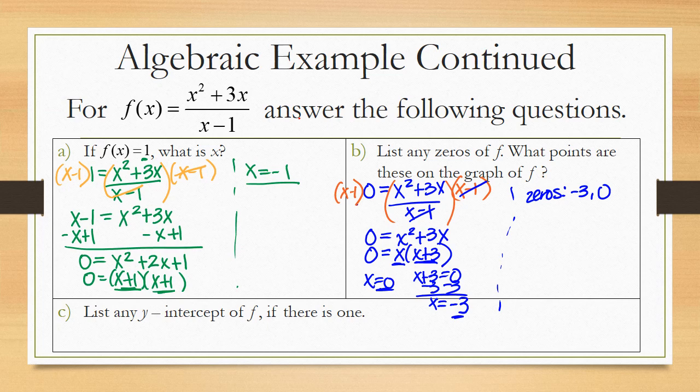And what are these points? Negative 3, 0, and 0, 0. Because again, for zeros of a function, it's when the y value or when the function is set equal to 0.